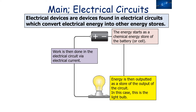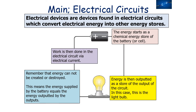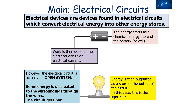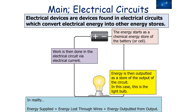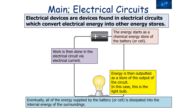The energy is then outputted as a store of the circuit's output — in this case a light bulb. Energy cannot be created or destroyed, so the energy supplied by the battery equals the energy outputted. We call this a closed system. However, in reality the circuit is an open system because some energy is dissipated to the surroundings through the wires — the circuit gets hot. So in reality, energy supplied equals energy lost through wires plus energy outputted from the output.